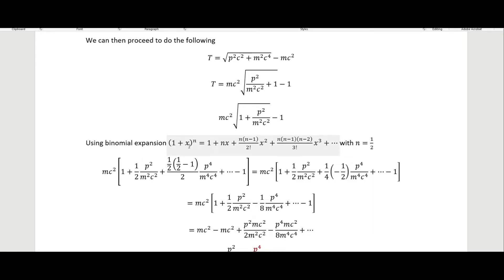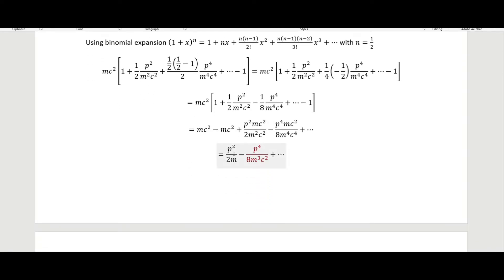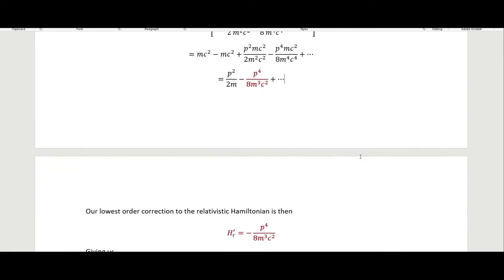The binomial expansion for (1 + x)^n equals 1 + nx + n(n−1)/2! · x² and so on, with n equal to one half because we are taking the square root. Going through all that, we end up with p²/2m as our first term — our classical kinetic energy term — and then p⁴ over 8m³c² as our first-order relativistic correction, shown here in dark red.